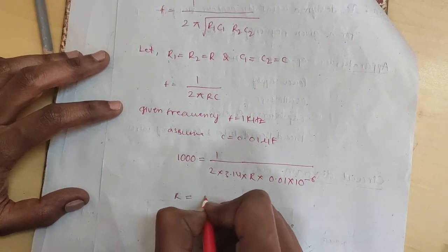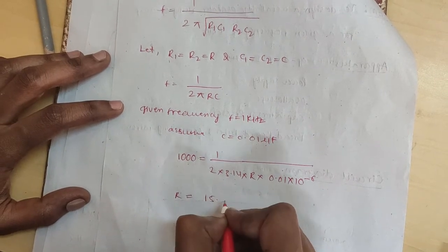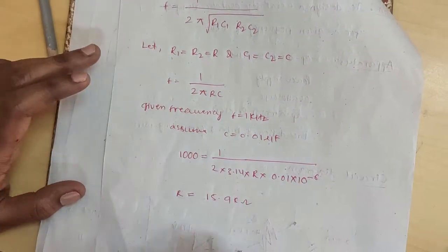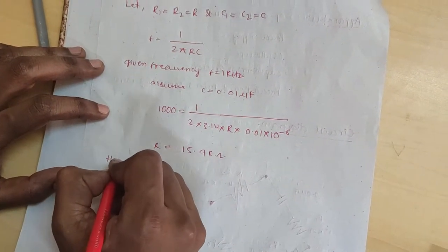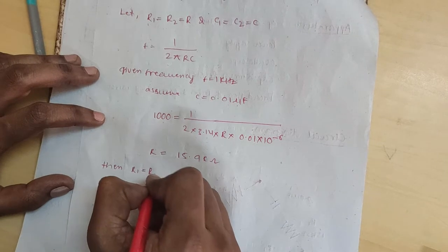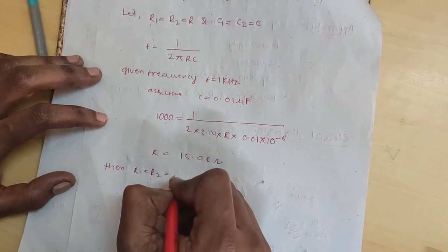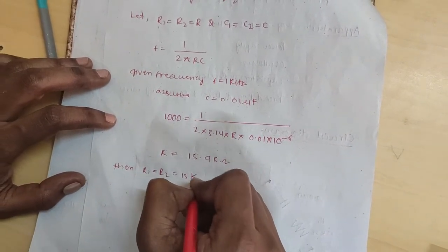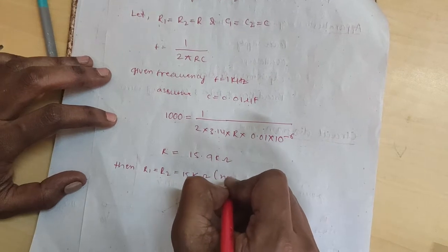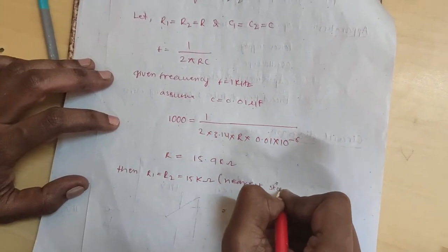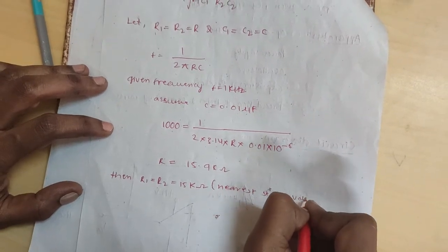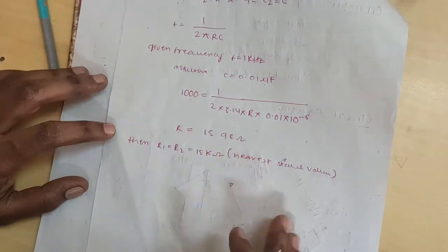Calculate it. R equal to 15.9 kilo ohms. Then R1 equal to R2 equal to 15 kilo ohms. This is the nearest standard value.